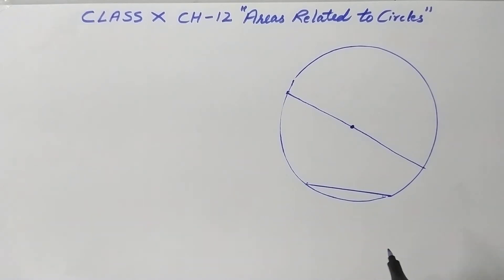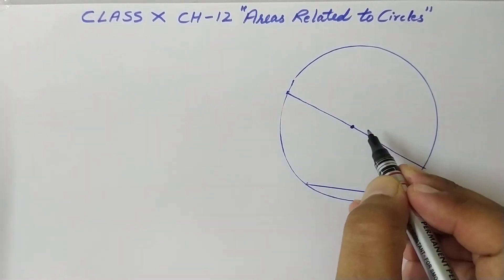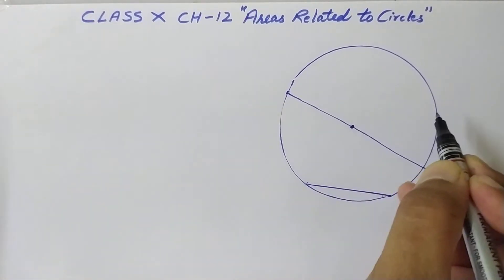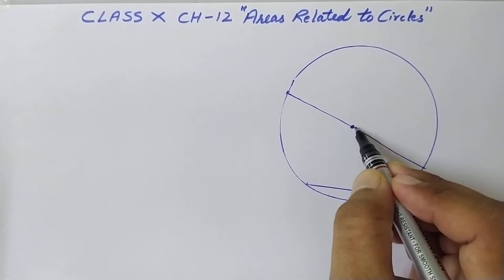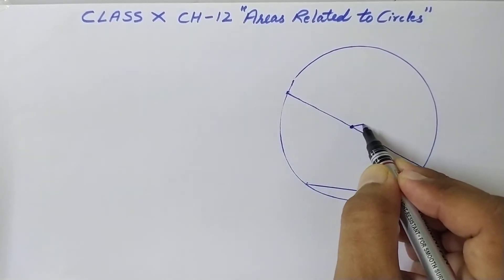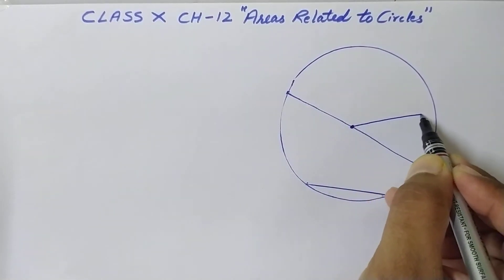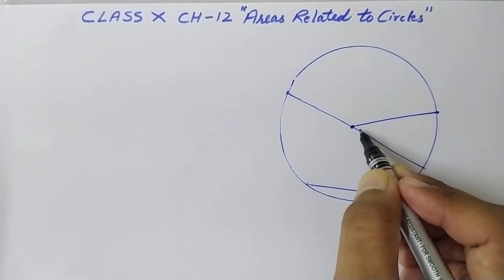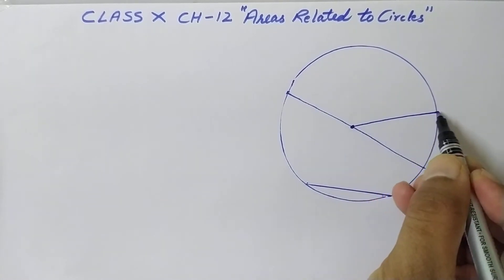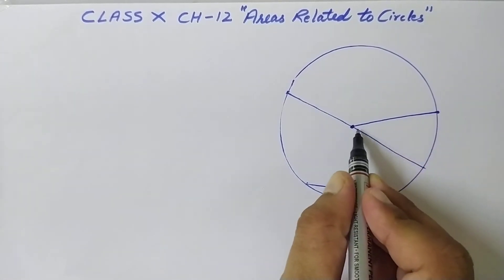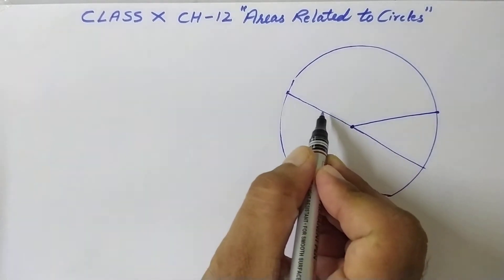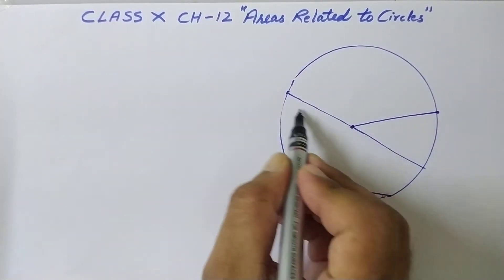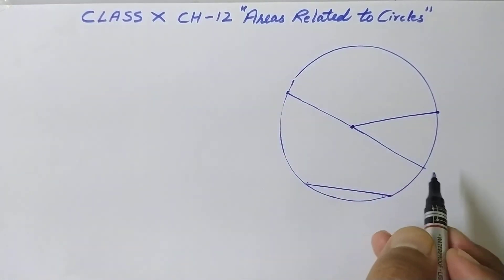Next, what is radius? If I join the center to any point on the circle, I get a radius. The diameter covers the full length through the center, so the diameter is double the radius.